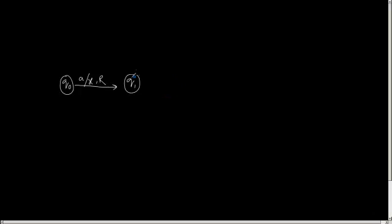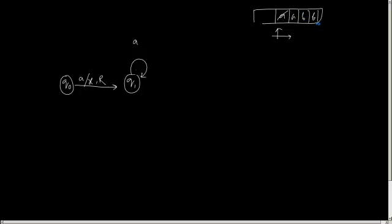So with Q1, if I am getting A — because I have just written the leftmost A as X, so if I am moving towards right I will encounter another A. While going to the rightmost B, I will encounter A as well as B. So if I am getting A, I should not touch anything and move towards right. And if I have a B, I should write Y and move towards left.